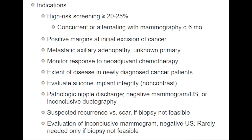The first indication is high-risk screening, having greater than 20 to 25% risk of breast cancer. In these patients, mammography every 6 months should be alternated with breast MRI. The next indication is tumours having positive margins at initial excision of cancer.